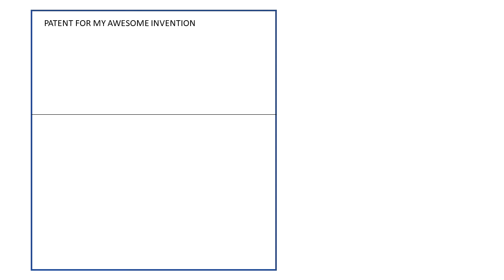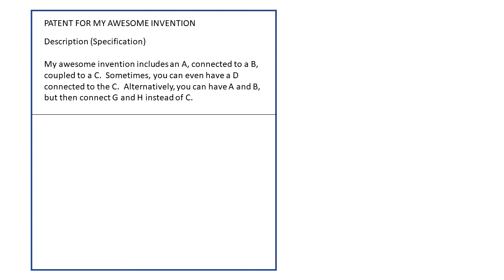Let's take a look at a sample patent. A patent has two main parts: it has a written description, also referred to as a specification. Here is our specification: my awesome invention includes an A connected to a B coupled to a C — sometimes you can even have a D connected to the C. Alternatively, you can have an A and a B but connect G and H instead of C.